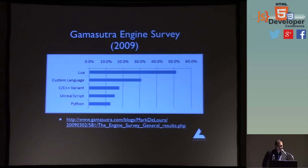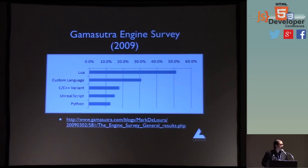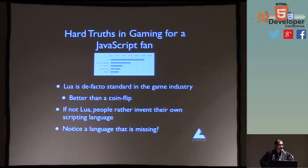I was looking for more recent surveys. This is the best one I found, but I've seen these results for years, even as far back as when I first learned about Lua around 2002. These results are pretty much the same — nothing really seems to change with general language usage. You can see that Lua is the de facto standard in the game industry; it's better than a coin flip that they're using Lua. And what's interesting is if they're not using Lua, they'd rather invent their own language. And there's a language very relevant to this talk that's missing from the chart.